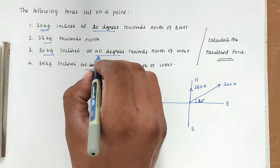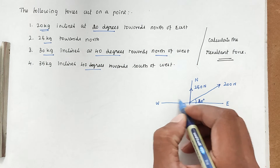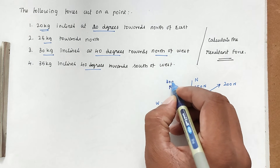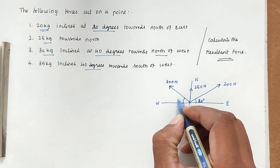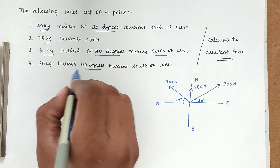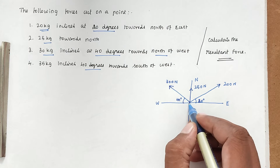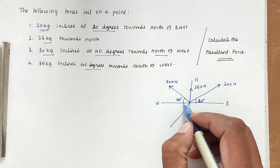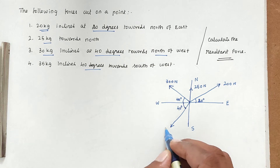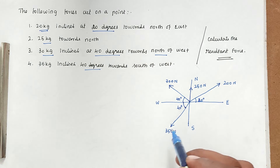The third force is 30 kg inclined at 40 degrees towards the north of west, equal to 300 N. The fourth force is 35 kg inclined 40 degrees towards the south of west, equal to 350 N. So we have four forces and we need to find the resultant force.